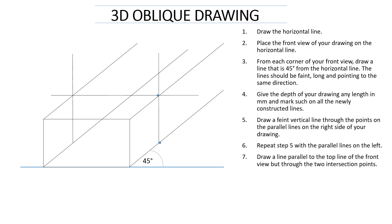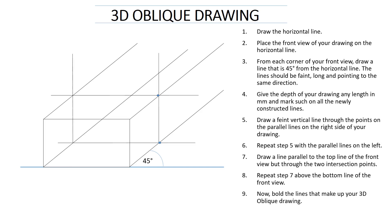What you do on top you must also do at the bottom of your drawing. Step eight says repeat step seven above the bottom line of the front view — you do it on those intersections above the bottom line of the front view. Now we have got our 3D oblique drawing and we just need to finalize it. We now bold the lines that make up your 3D oblique drawing to show the completed 3D drawing. Now they are all bolded — you can safely say this is our 3D block drawn to scale.